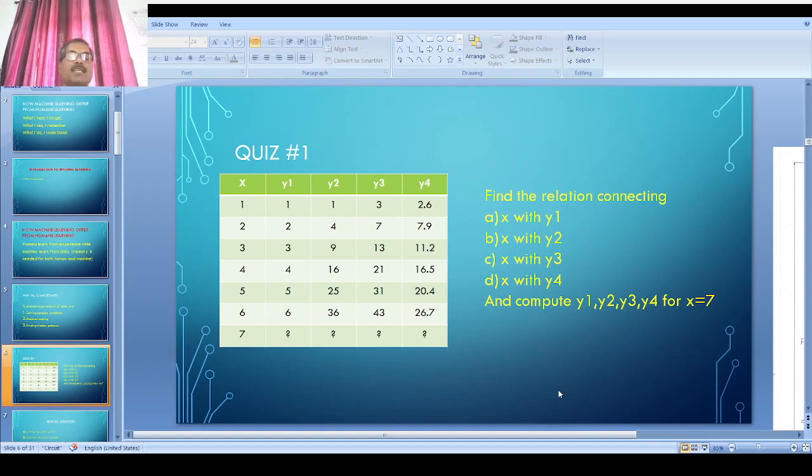The relation connecting the first two columns, x and y1, you can directly write y1 equals x. Your brain has learned that y1 equals x—that is the learning here.